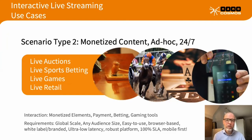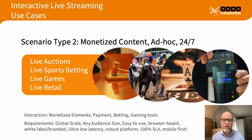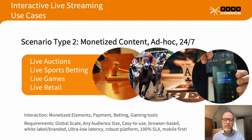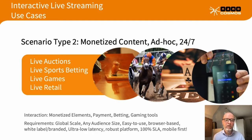Scenario two is different — it's not based on specific larger events for larger audiences. It's more based on a recurring event type of application where you have a recurring revenue channel, monetized content based on monetized video. That could be live auctions, live betting, live games, or even live retail.